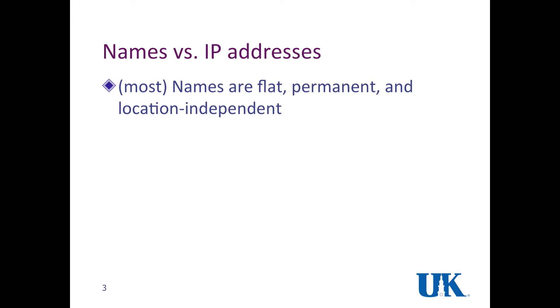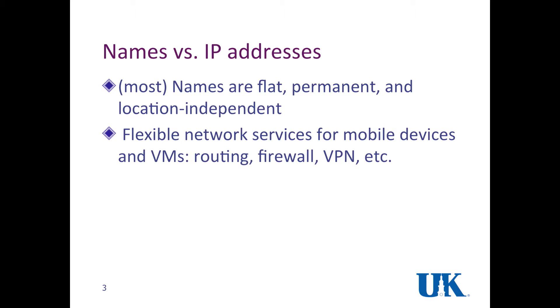For the destination or the identifier of the packets, in legacy networks we use IP addresses. However, recently people proposed to use names rather than IP addresses for the identifier of a packet. Most names are flat, permanent, and location independent, such as MAC address and other names proposed in the literature. Using names provide flexible networking services for mobile devices and virtual machines. In SDN, the flow IDs like packet headers can also be considered as names rather than IP addresses.